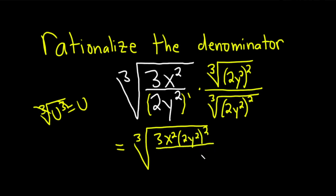And then down here we're going to get 2y squared and then cubed because 1 plus 2 is 3 as you add these exponents.